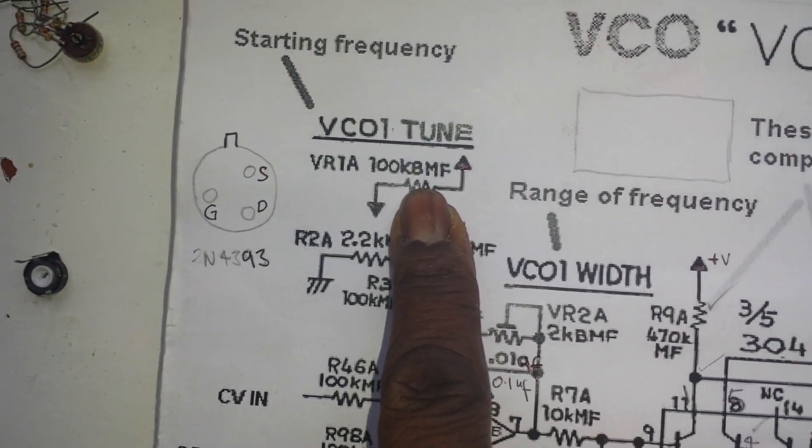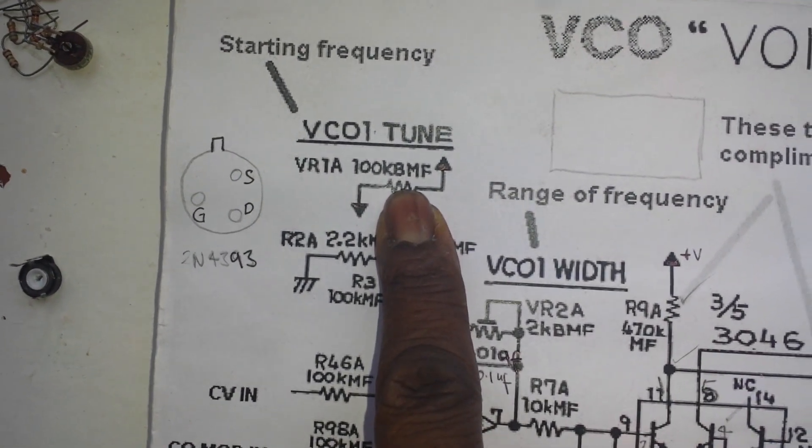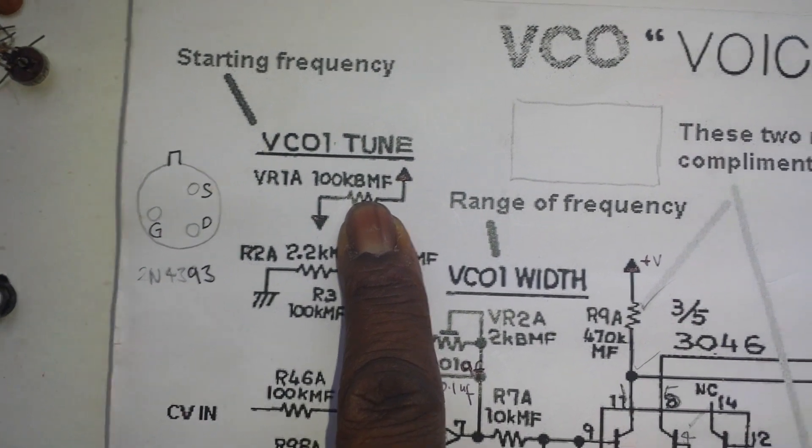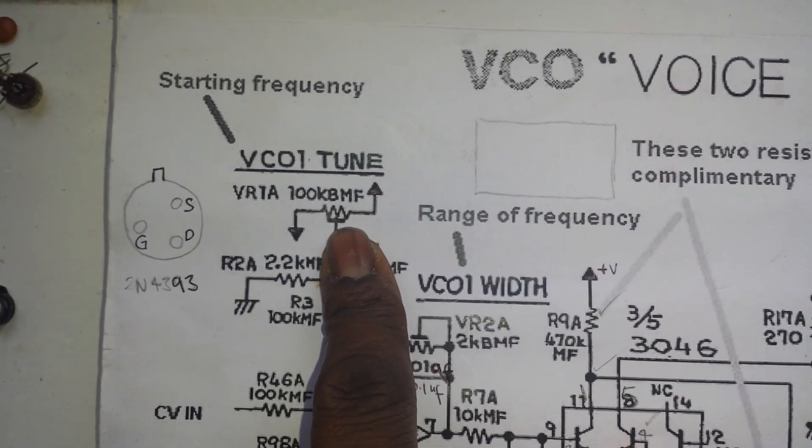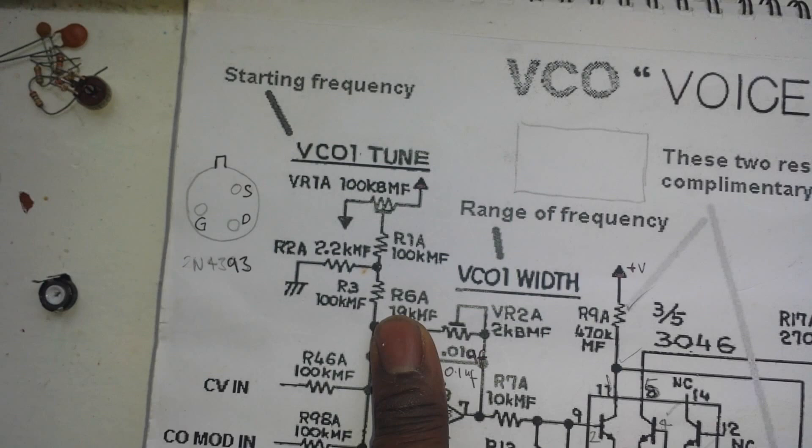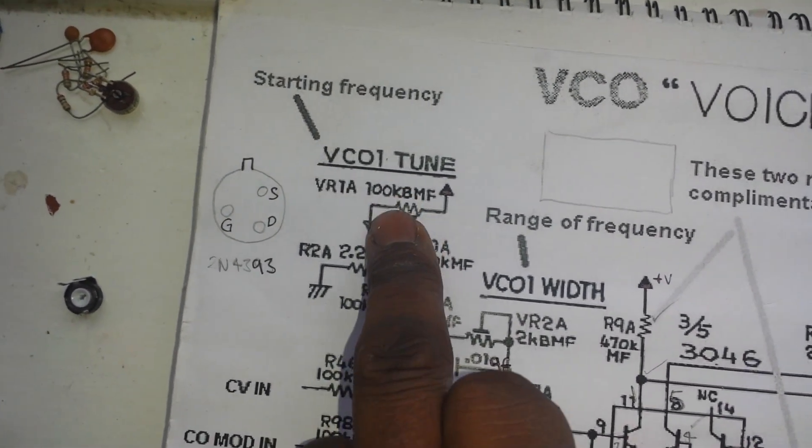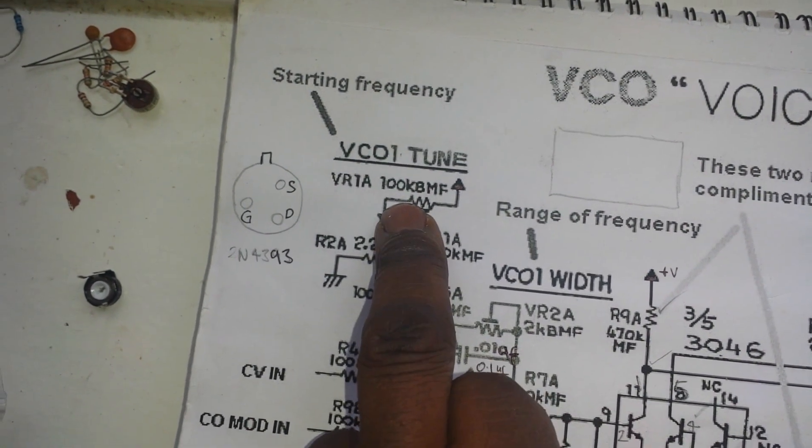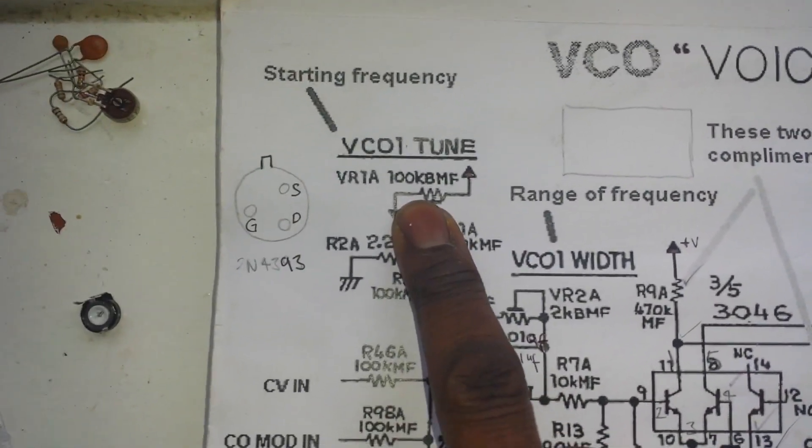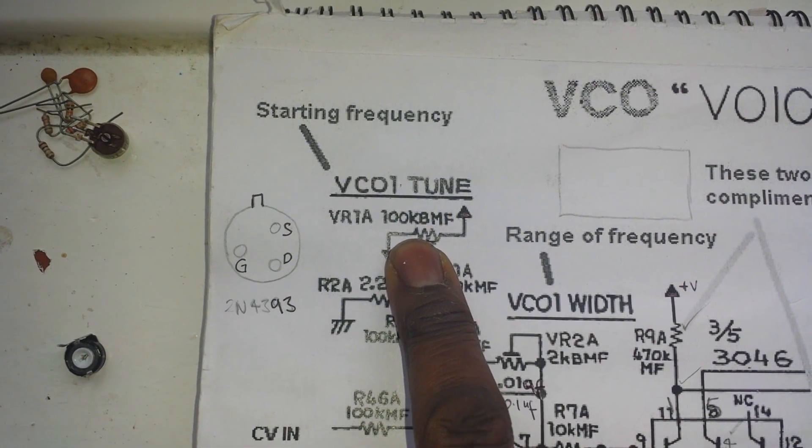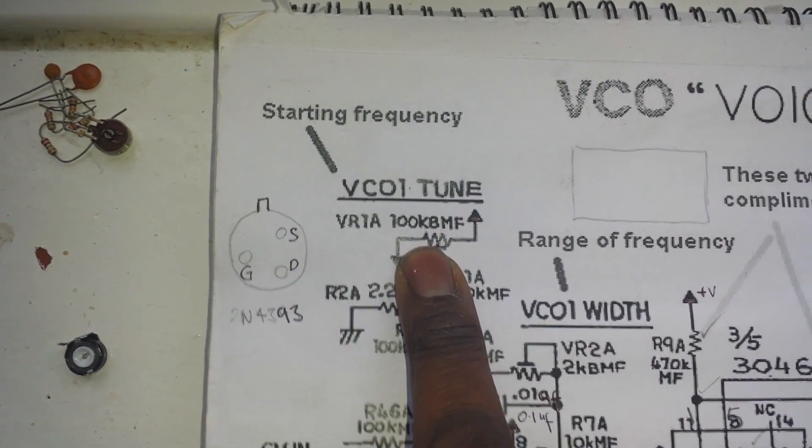So basically this will set the frequency at which your oscillator will always be oscillating. Because these are called free running oscillators, so they won't start as soon as you hit the key. They will always be running at a certain frequency. And most times this will be the base frequency in which they will start. Which I've set mine to about 16 hertz, 16 and a half hertz.